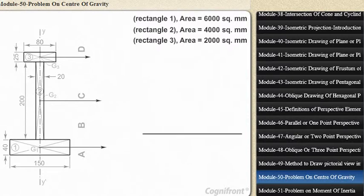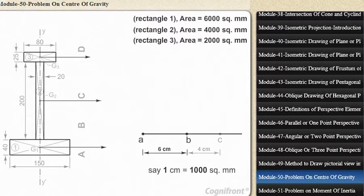Draw a line parallel to the lines of action of forces and mark a point A on it. Select a convenient scale, say 1 cm = 1000 square mm, and cut off length AB = 6 cm, BC = 4 cm, and CD = 2 cm in the direction of the forces. The line AD is also called the load line or force diagram.